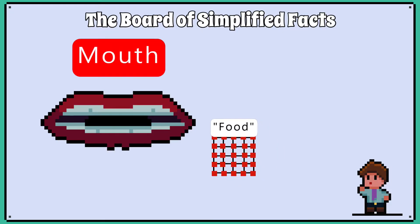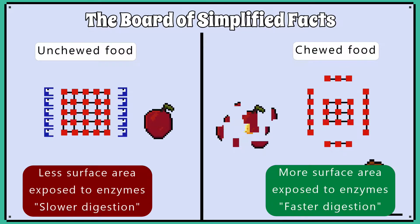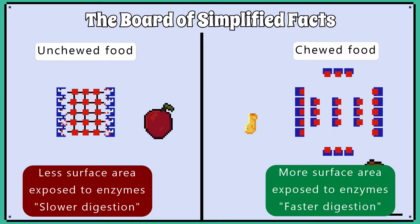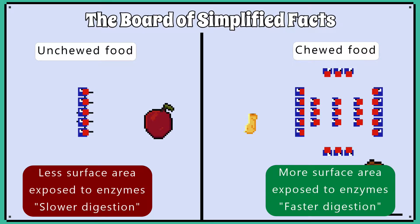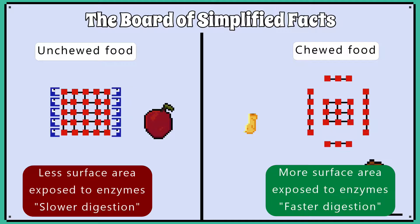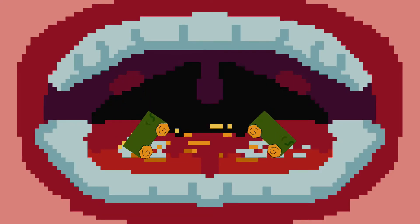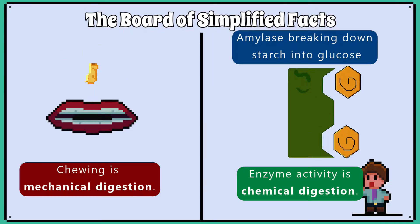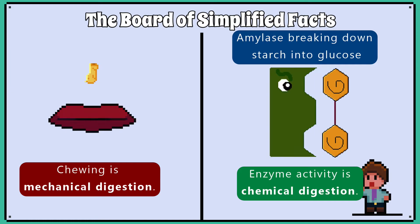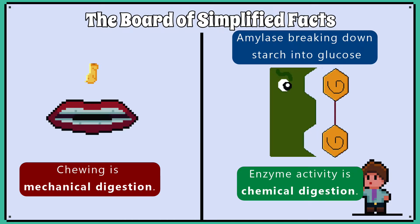Starting with the mouth, food enters here and is chewed into smaller pieces, which increases the surface area exposed to enzymes. We call this physical breaking up of food mechanical digestion. Starch digestion also starts in the mouth as amylase is found in saliva. When enzymes break large insoluble food molecules into smaller soluble molecules, we call this process chemical digestion.